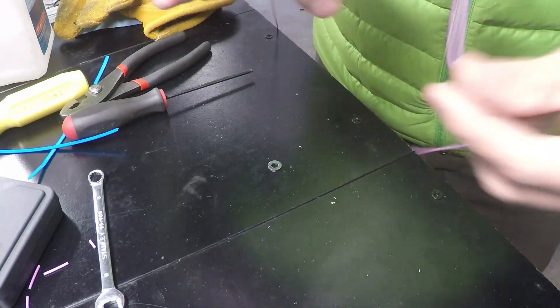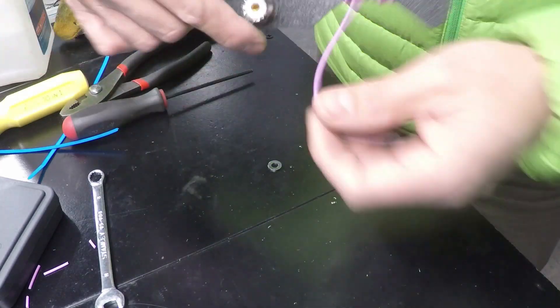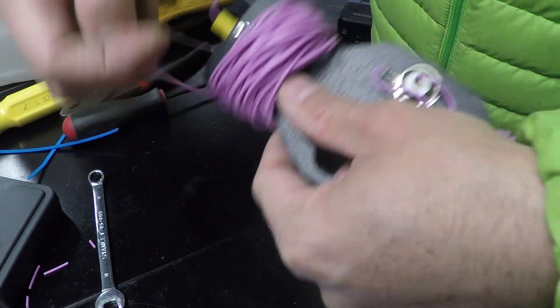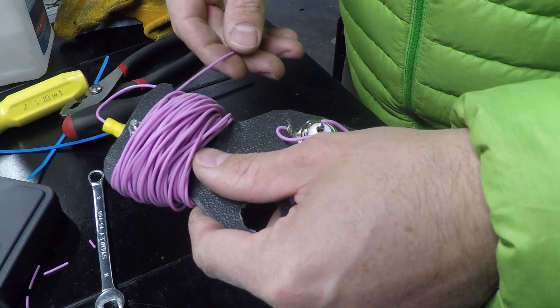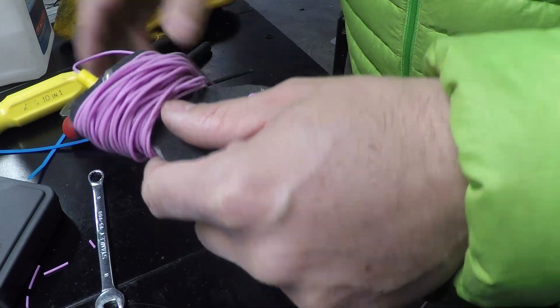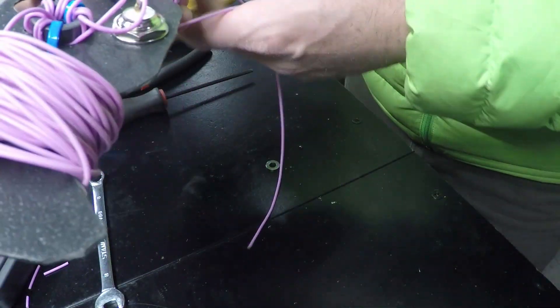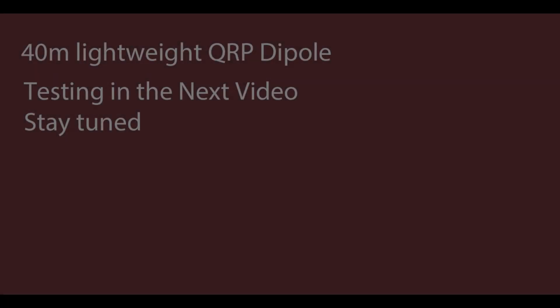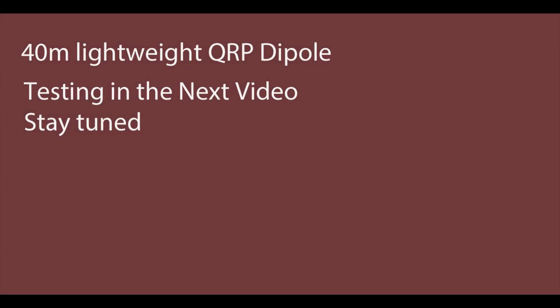All right, with the legs attached, I start winding it. It is time to get this out in the field and test it. I'm going to be using a nano VNA to locate the center frequency of this antenna and trim it accordingly. I've had really good luck with the nano VNA and tuning other antennas. So stay tuned.